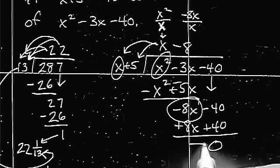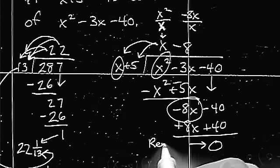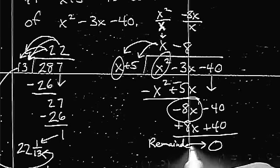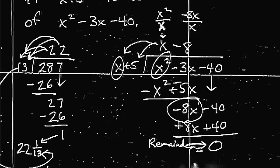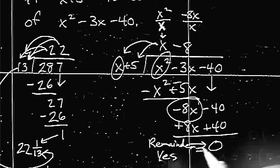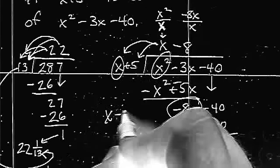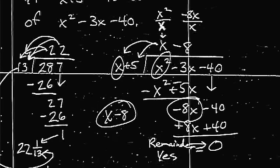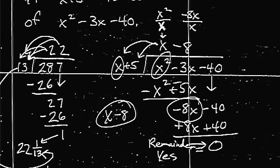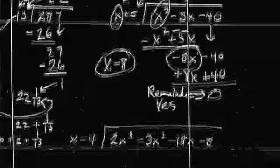So, when I got a remainder equal to zero, the answer to the question is yes. x plus 5 is a factor. It goes in x minus 8 times. That's the final answer to the question. But, you're right. It goes in evenly. Therefore, it is a factor.